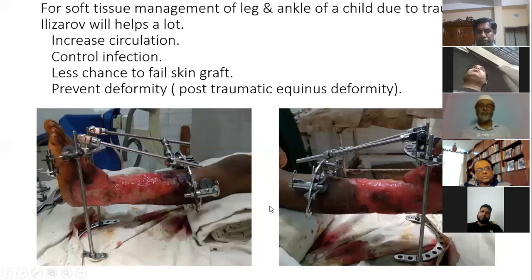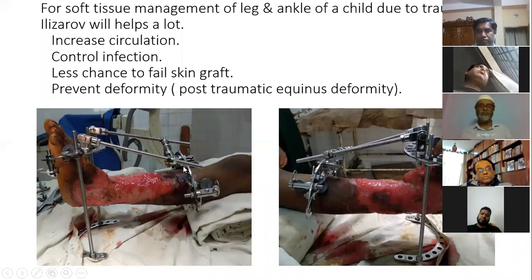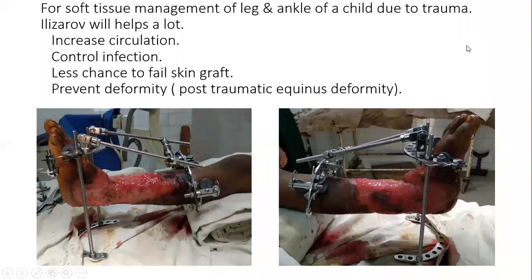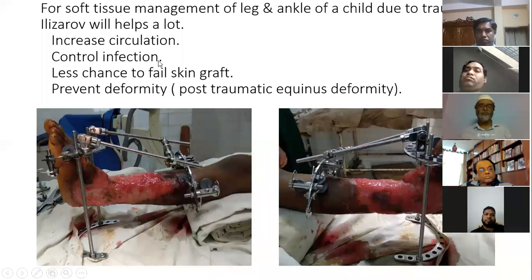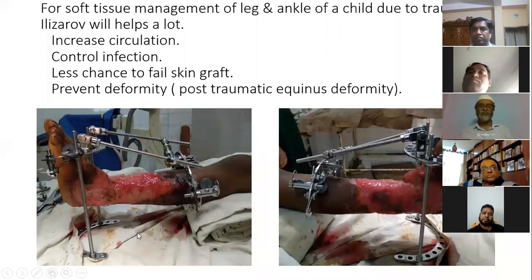Here is a ring with multiple uses — you can see only the half rings, posts, and hinges. This is usually used for soft tissue management of the leg and ankle of a child due to trauma. It helps a lot: it increases circulation, controls infection, reduces chance of skin graft failure, and prevents post-traumatic equinus deformity. Here you can see the half rings clearly.